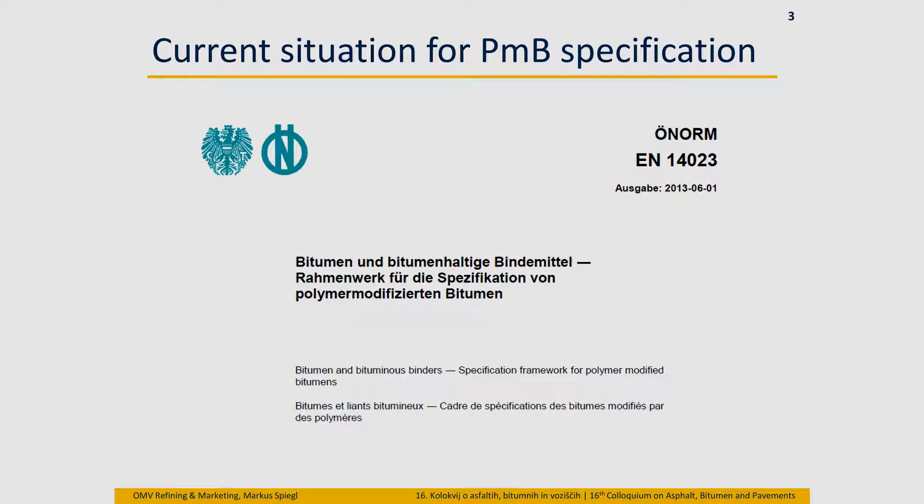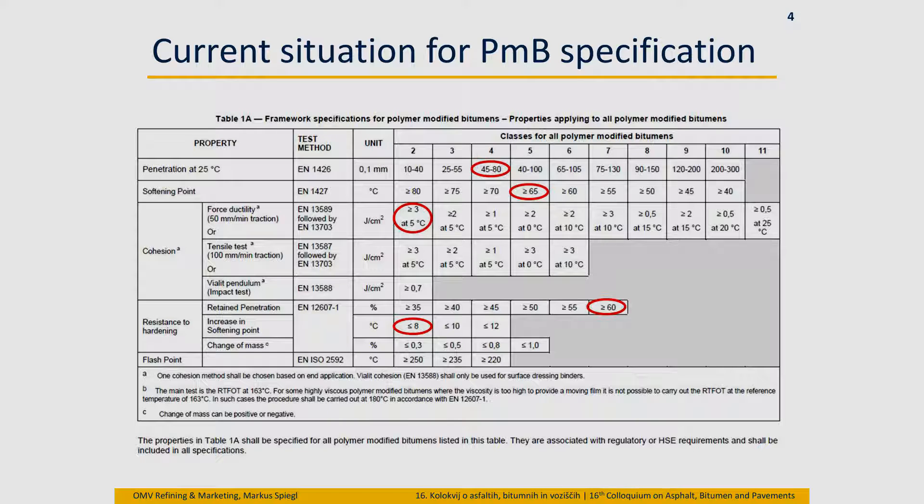This standard — I think everybody knows it — it's the EN14023, it's about PMB modification. You might know also this table. It's a framework where you can choose the various properties and the various classes for each property. Here I gave an example for a PMB 45-80-65, which is the common product here also in Slovenia, but also in Austria. That's the way of how you can describe it — very simple test methods, you choose the classes, and then you're describing the product. We did this also for the Austrian standard, so that's the Austrian translation of the European standard, and here you see how we describe in Austria our PMB 45-80-65.